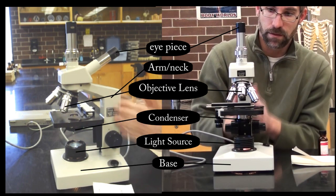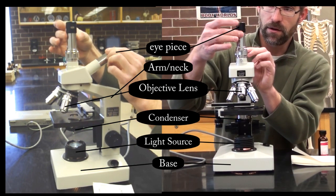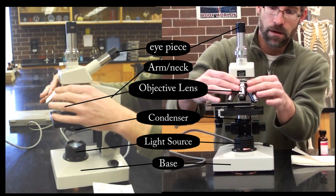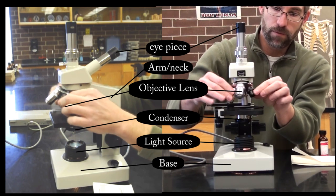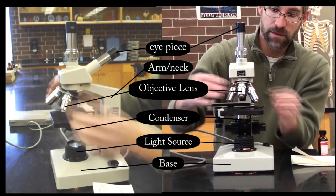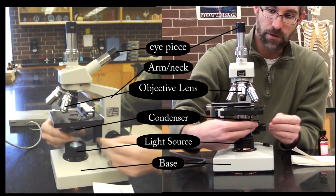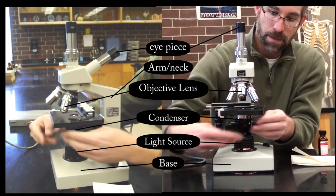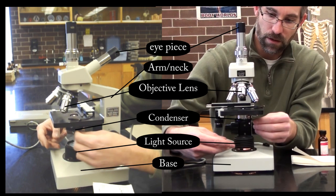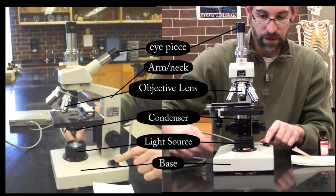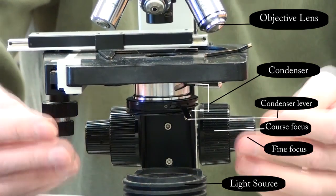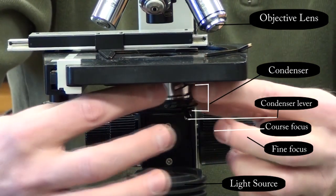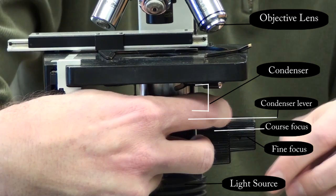So we've got the base, arm, headpiece with our objectives and eyepieces. We've got four different objective lenses. The condenser and iris will allow us to control light, along with our light source and switch. We have coarse focus, fine focus, the condenser unit, and the iris.